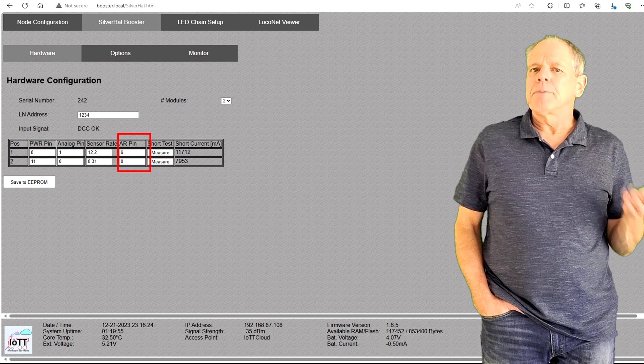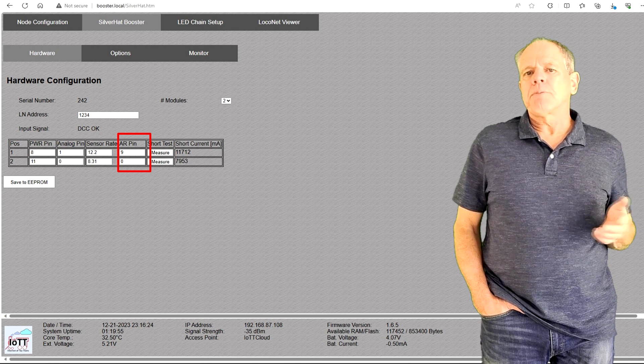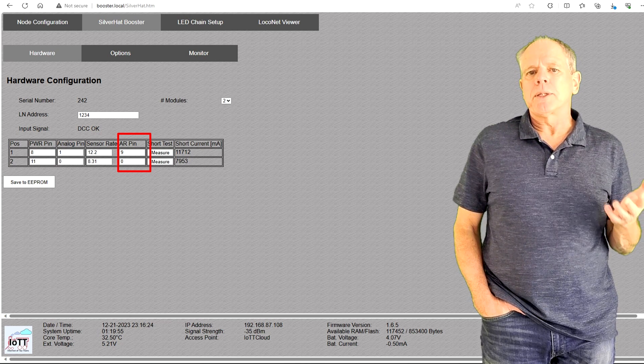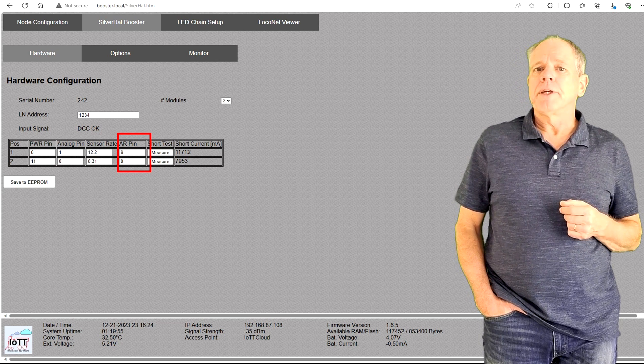If the PowerShield you are using supports polarity reversing, you can also enter the pin number to control the output polarity. Note that polarity reversing is supported starting with PowerShield Revision 5. Another topic for a future video.